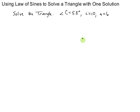So angle C is 58 degrees, side C is 10, side A is 6. We can use the law of sines because I can use angle C with side C, and then I have one other piece of information.